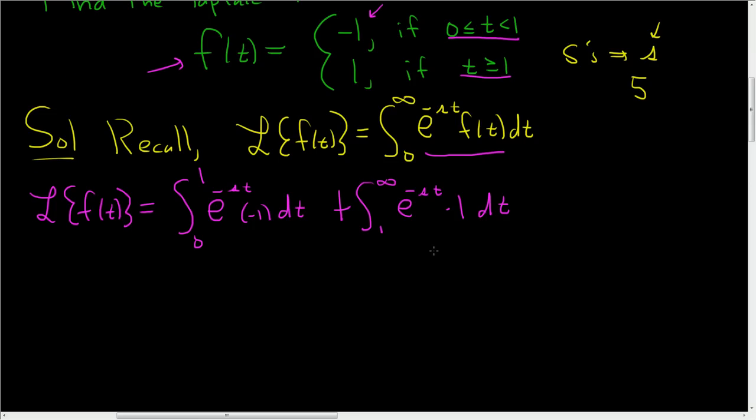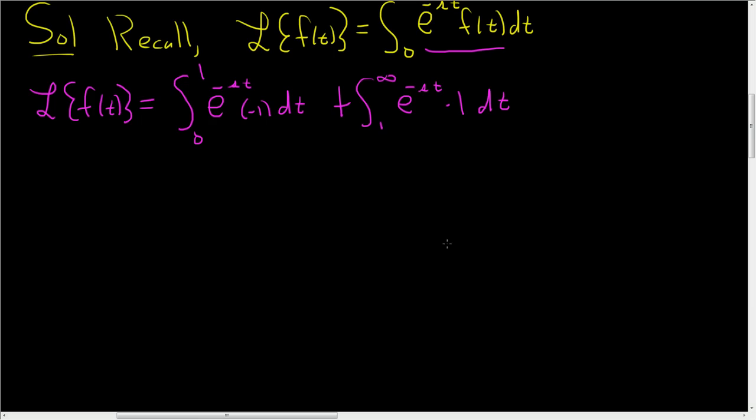Okay, so breaking it up is key. Once you break it up, it's all about being careful. So let's write it again, just to clean things up. So this is the integral from 0 to 1, e to the negative st dt. And the negative, I'm going to put it, I'll leave it here. There's the negative plus the integral from 1 to infinity, e to the negative st dt.